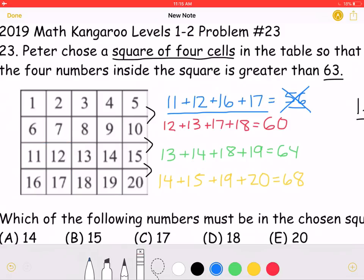Now, let's take a look at the next square. 12 plus 13 plus 17 plus 18 is equal to 60. 60 is less than 63, so this square also does not work.